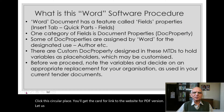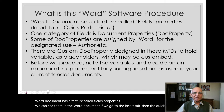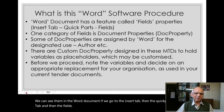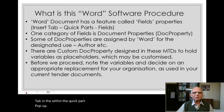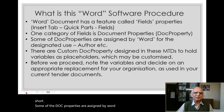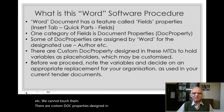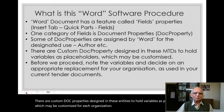Let us discuss the Word software procedure. Word document has a feature called field properties. We can see them by going to the Insert tab, then the Quick Parts tab, and then the Fields tab within the Quick Parts pop-up. One category of fields used in Word is called the Document Property, or doc property in short. Some doc properties are assigned by Word for specific use, like author, date of publishing, etc. We cannot modify those.